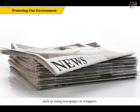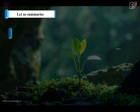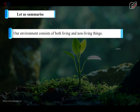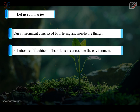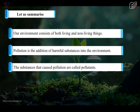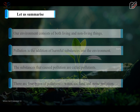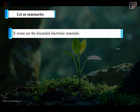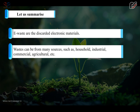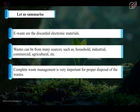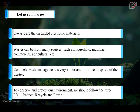Our environment consists of both living and non-living things. Pollution is the addition of harmful substances into the environment. The substances that cause pollution are called pollutants. There are four types of pollution: water, air, land and noise pollution. E-waste refers to discarded electronic material. Waste can be from many sources, such as household, industrial, commercial, agricultural, etc. Complete waste management is very important for proper disposal of wastes. To conserve and protect our environment, we should follow the three R's: reduce, recycle and reuse.